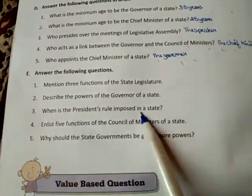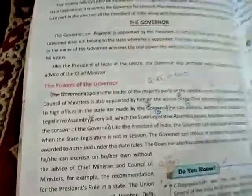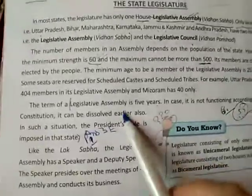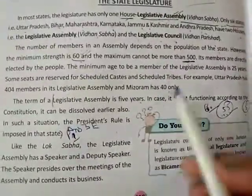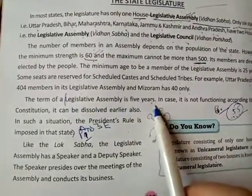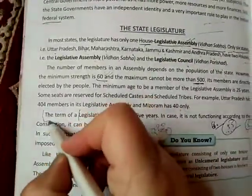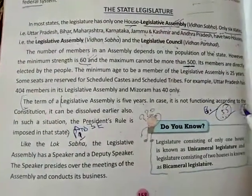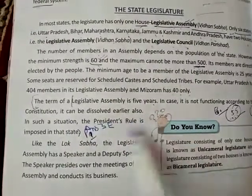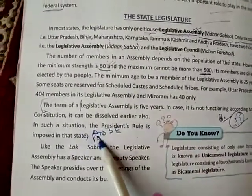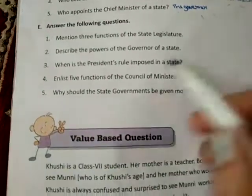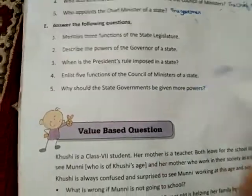E3: When is the President's Rule imposed in a state? Come to page number 158, second last paragraph. The term of a legislative assembly is 5 years. In case it is not functioning according to the constitution, it can be dissolved earlier. In such a situation, the President's Rule is imposed in the state.